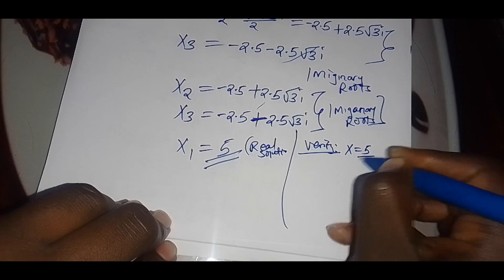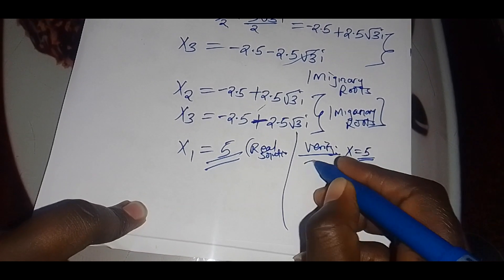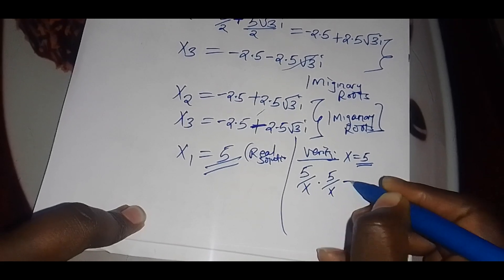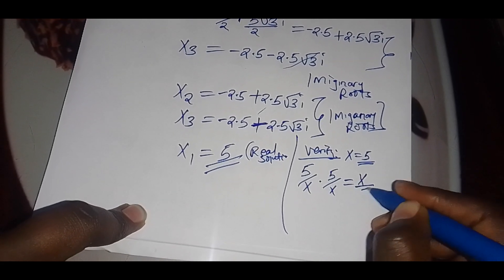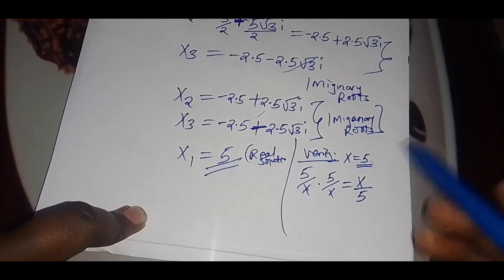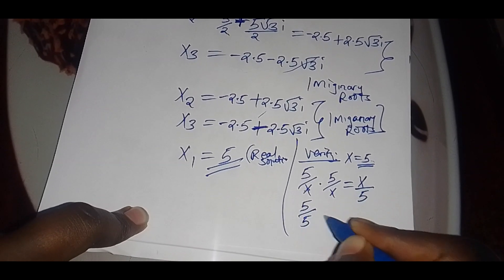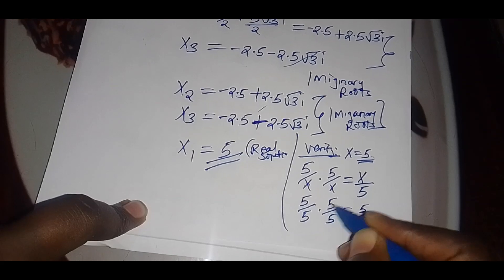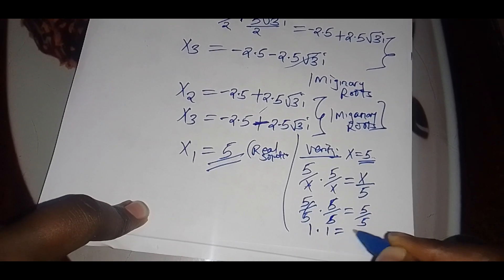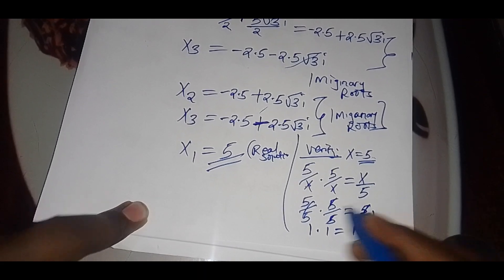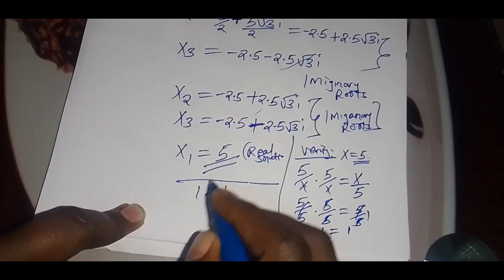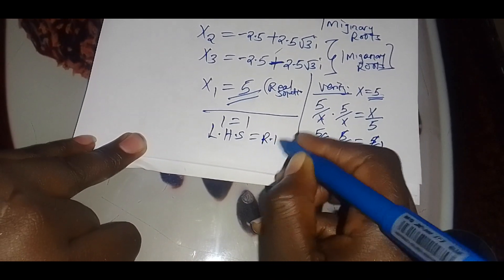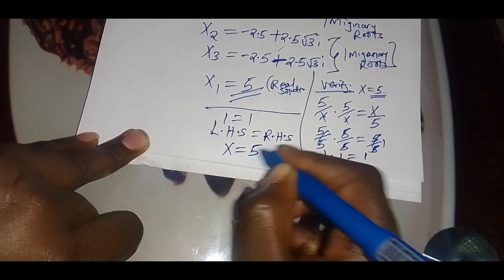We can verify: substituting x equals 5 into 5 divided by x multiplied by 5 divided by x equals x divided by 5, we get 5 divided by 5 multiplied by 5 divided by 5, equal to 5 divided by 5. That simplifies to 1 times 1 equals 1, confirming the left-hand side equals the right-hand side. This affirms that x equals 5.